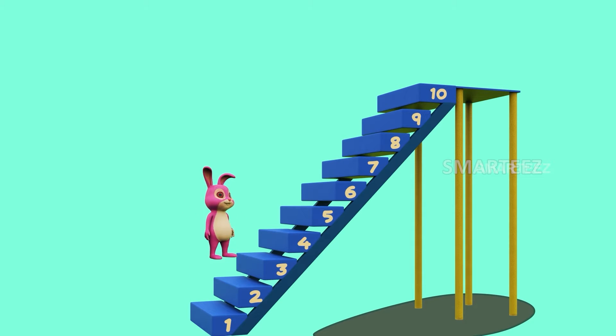When we go from 1 to 2, 2 to 3, 3 to 4, 4 to 5 and so on, until we reach the top, we call it ascending. When we go up the stairs, we call it ascending.